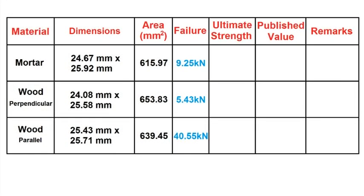From the values of failure load in kilonewtons, calculate the ultimate strength of each material by dividing it by the cross-sectional area. In the remarks column, comment on things like how the material failed or, if applicable, why the ultimate strength was not within the range of published values.